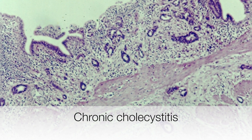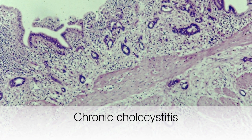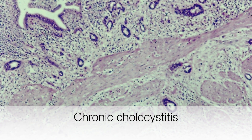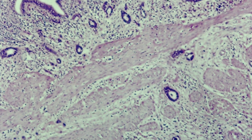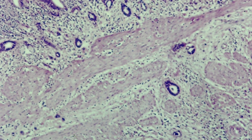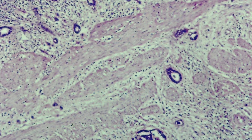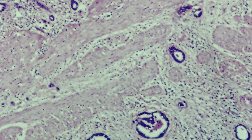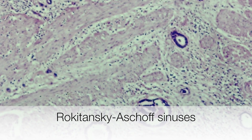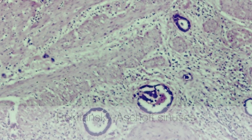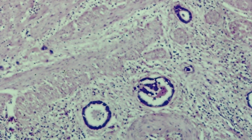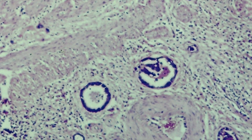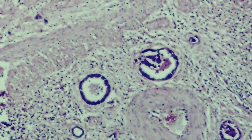Histologically in chronic cholecystitis you can see a chronic inflammatory infiltrate, an obviously thickened smooth muscle layer due to hypertrophy and fibrosis, and in addition there are Rokitansky-Aschoff sinuses where the mucosa bulges into the wall of the gallbladder.